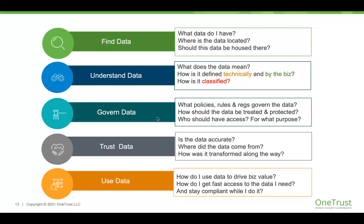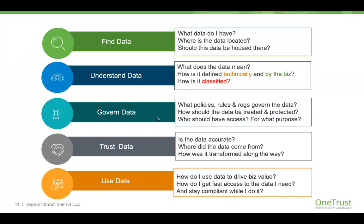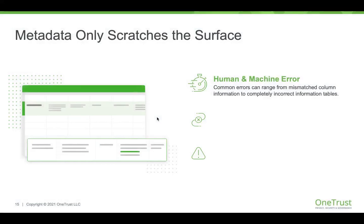This is the balance of driving business value and innovation while maintaining compliance — not as an afterthought, but all along the way. When it comes to all of these steps and the role discovery plays, it really plays a role in each of them — from finding the data, understanding and getting contextual information, uncovering if policies are being enforced, discovering pieces around quality, and accelerating the time for individuals to access information. But is metadata discovery enough for this type of work? What we've seen in practice is that metadata is a good first step, but it only scratches the surface.